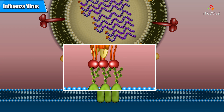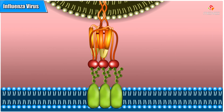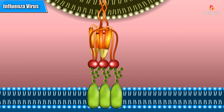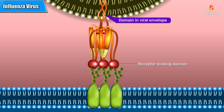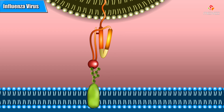The hemagglutinin complex consists of a trimer of subunits. Each subunit includes a domain that passes through the viral envelope and a domain that binds to the sialic acid receptors on the host cell. For clarity, let's look at just one of these three subunits.